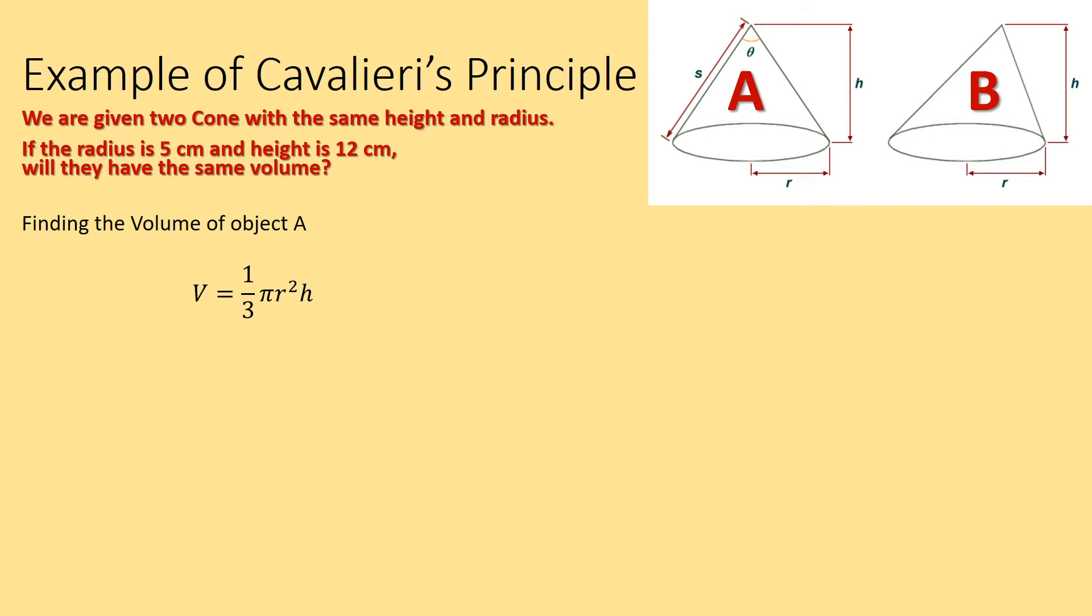It's a cone. There's my formula: V = (1/3)πr²h. The base, which is πr², times the height. And don't forget, we have to take one-third of it. We were told that the radius is 5 and the height is 12.